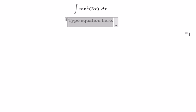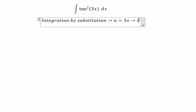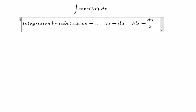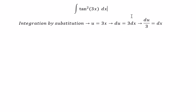We need to use integration by substitution. We will set u equal to 3x, so du equals 3dx. That's why du divided by 3 equals dx, because we divide both sides by 3.